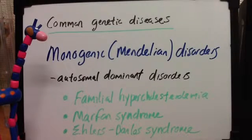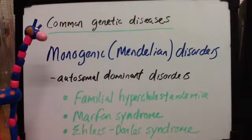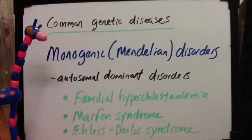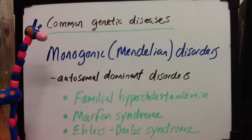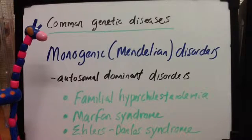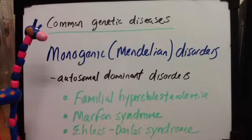In Ehlers-Danlos syndrome, you similarly have ruptures of large vessels because of the increase in elasticity, and then problems with the colon and cornea. These were just some examples of the autosomal dominant disorders: familial hypercholesterolemia, Marfan syndrome, and Ehlers-Danlos syndrome.